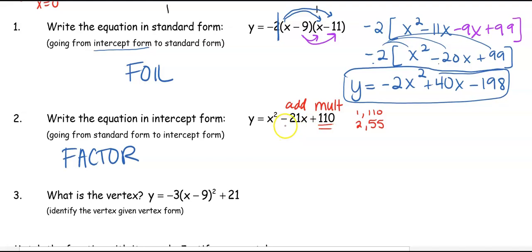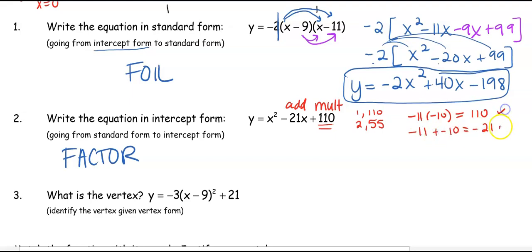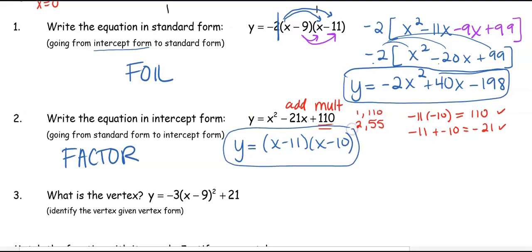Since we're multiplying to a positive and adding to a negative, both numbers must be negative. So negative 11 times negative 10 gives us positive 110, and negative 11 plus negative 10 gives us negative 21 — hitting both criteria. So intercept form is y equals (x minus 11)(x minus 10).